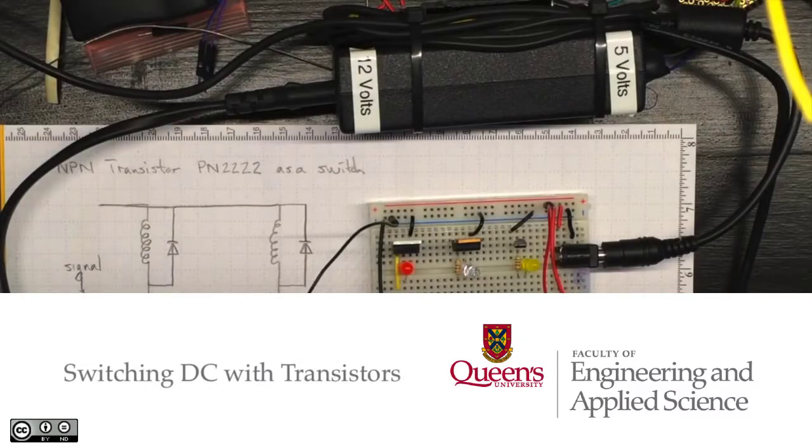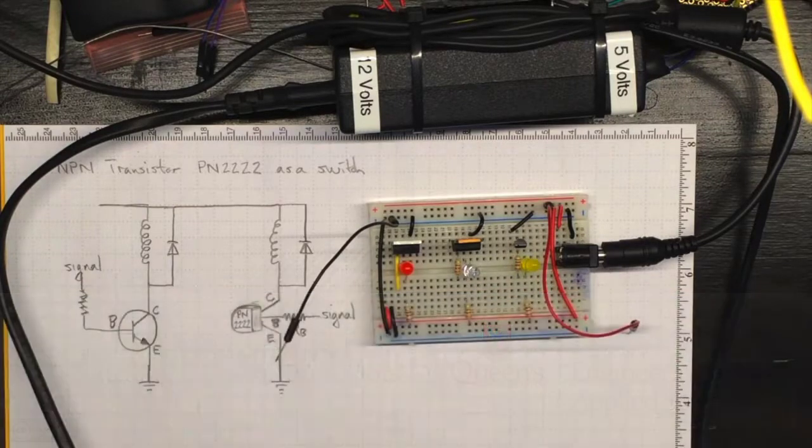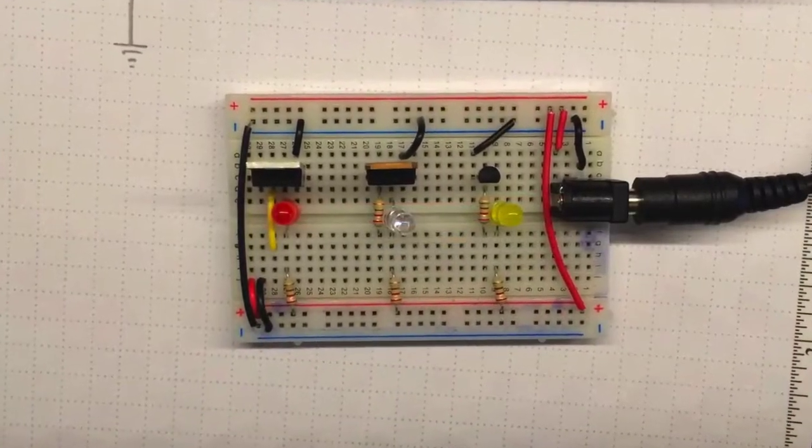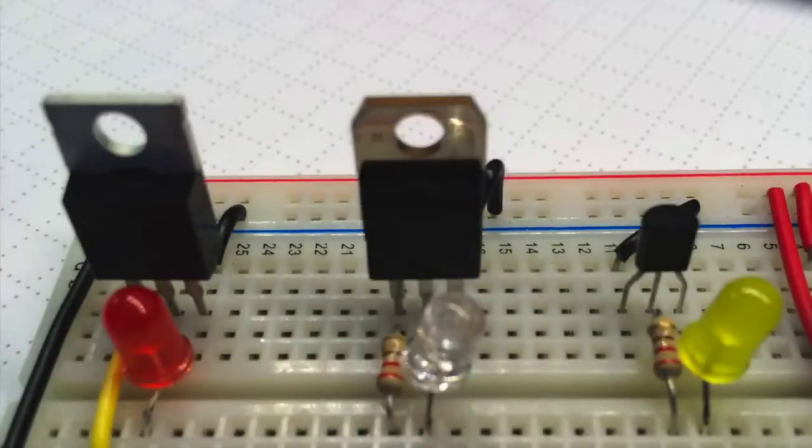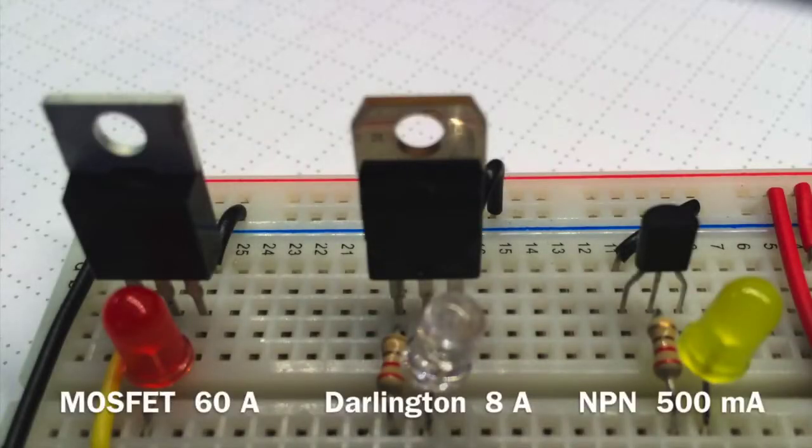This little breadboard circuit shows three different transistor switches you can use to turn DC current on and off. More current, higher cost. The MOSFET's about $3, the Darlington about $2, and the NPN about 25 cents.